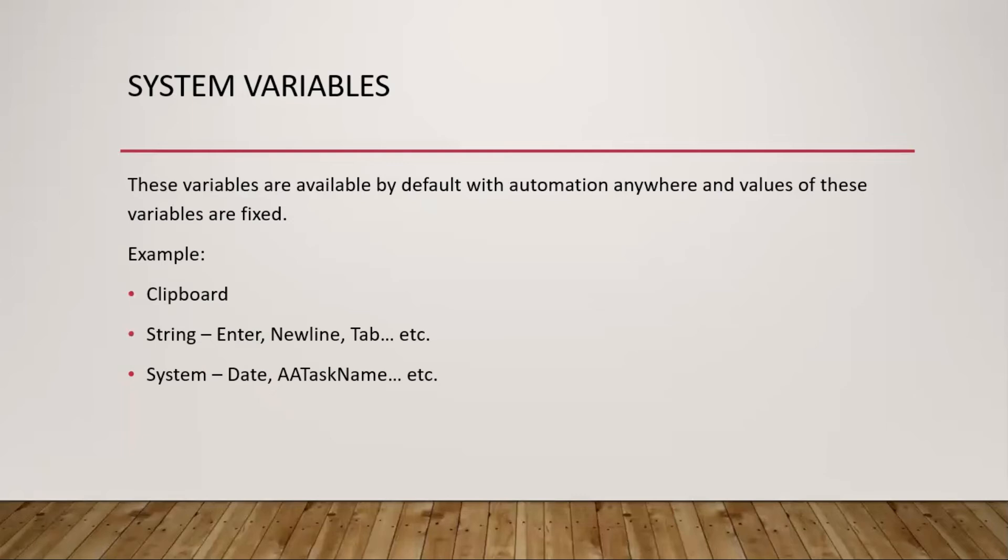System variables already hold system information. For example, the date is always the system date, and task name is always our ATM's file name. These variables are already defined and you cannot modify them. These are called system variables.